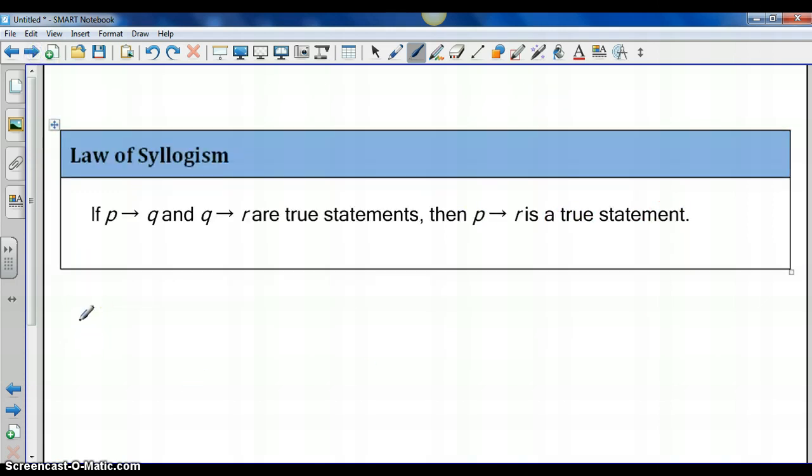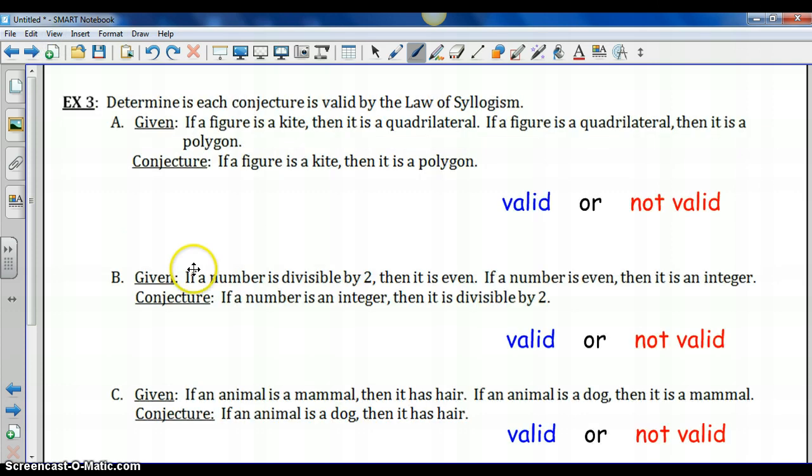So next we have the law of syllogism. In this law, we are given two conditional statements that are related. If, if P then Q, and if Q then R are true statements. Let's look at that before we move on. These conditional statements share a statement, Q. We take the conclusion of the first conditional, and we make it the hypothesis of a second conditional. So if that chain of logic is true, then we can say the original hypothesis gets us to our final conclusion. If P then R would be a true statement. We can kind of skip over this middle part and explain that if our first hypothesis is true, then our final conclusion is true.